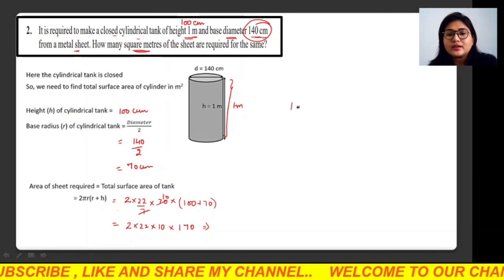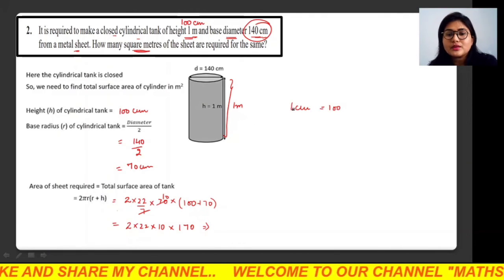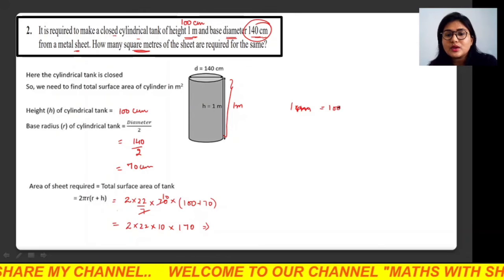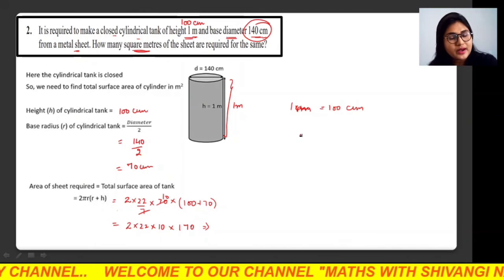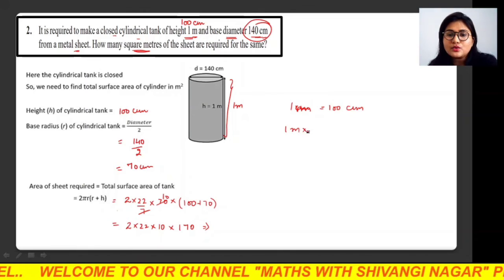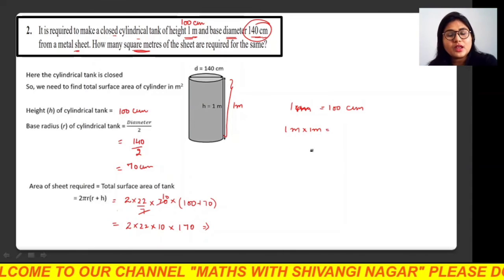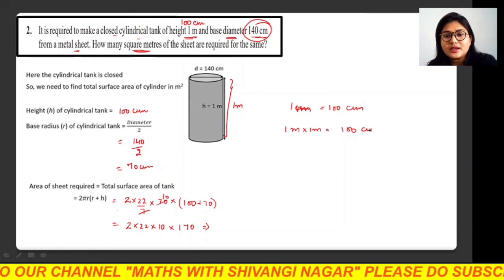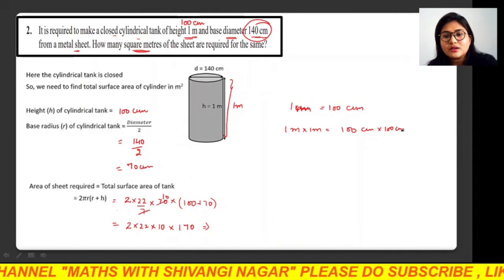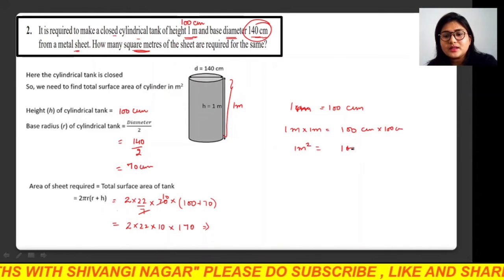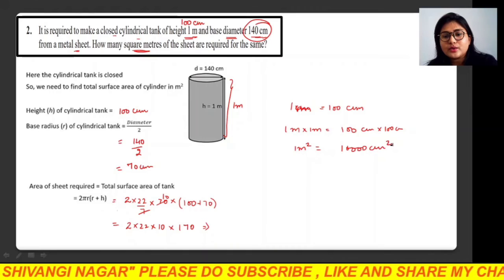So we know that 1 meter equals 100 centimeters, right? So 1 meter × 1 meter will be 100 centimeters × 100 centimeters. So 1 meter square will be 10,000 centimeter square.